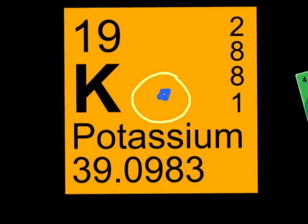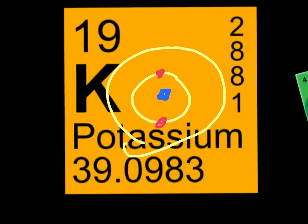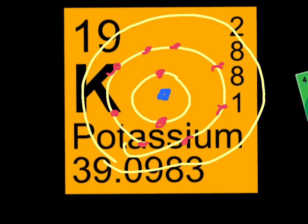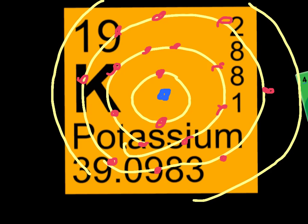Our first ring can only fit two, just like Andrew said. Then we just keep on filling up the rings until we have a total of 19 electrons. Kids, you can count with me: 1, 2, 3, 4, 5, 6, 7, and 8. There we go. And then our last ring will have one on it — that becomes our valence electron.